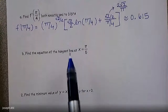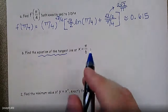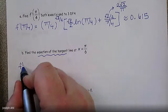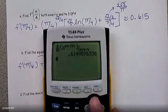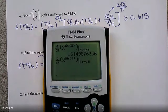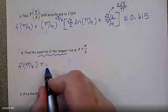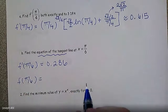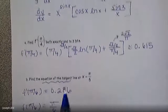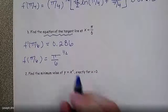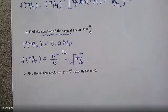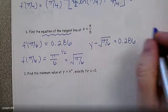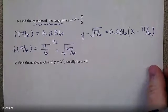Now let's find the equation of the tangent line at x equals pi over six. Using the calculator, the derivative at pi over six is approximately 0.286 to three decimal places. We also need the point of tangency: f of pi over six is pi over six to the sine of pi over six, and sine of pi over six is one half, so that's pi over six to the one half, which is the square root of pi over six. The equation of the tangent line is y minus the square root of pi over six equals 0.286 times x minus pi over six.